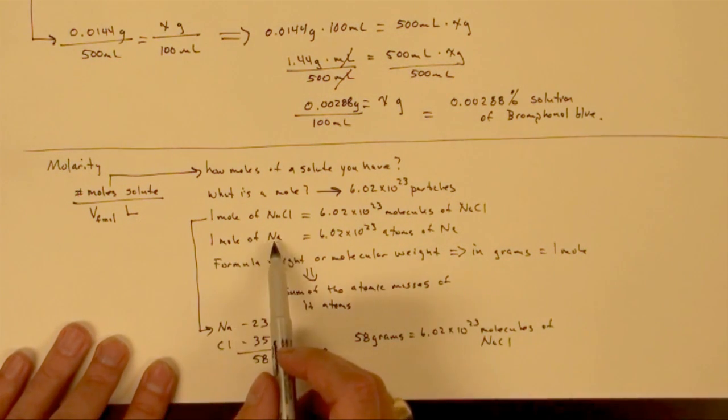So what it also means in terms of sodium, if I have 23 grams of pure sodium, I will have 6.02 times 10 to the 23rd atoms of sodium.